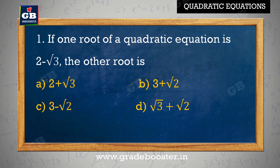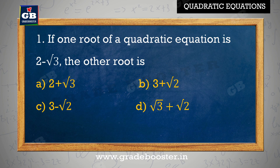If one root of a quadratic equation is 2 minus root 3, then the other root is: A. 2 plus root 3, B. 3 plus root 3, C. 3 minus root 2, D. root 3 plus root 2.